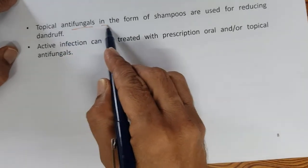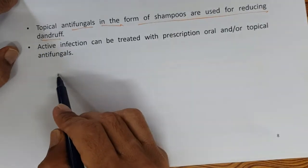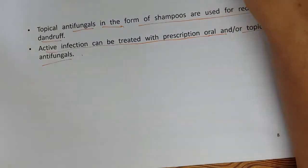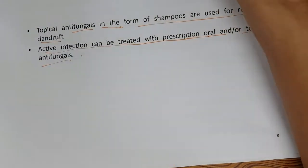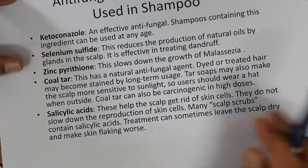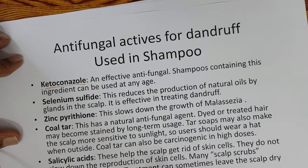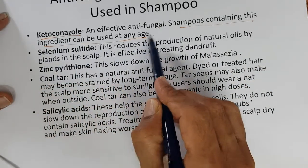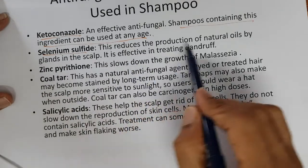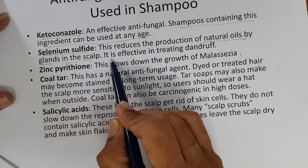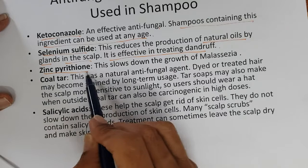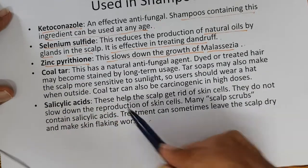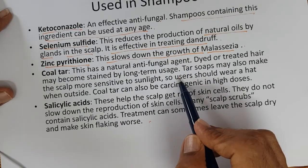Topical antifungals in the form of shampoos are used for reducing dandruff. Active infections can be treated with oral and topical antifungals. The antifungal actives used in personal care products include: ketoconazole — an effective antifungal shampoo ingredient that can be used at any age; selenium sulfide — which reduces production of natural oils by glands in the scalp; zinc pyrithione — which slows down the growth of Malassezia, the yeast-like fungus; and coal tar — which has a natural antifungal agent.